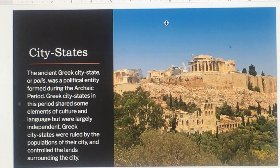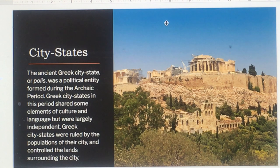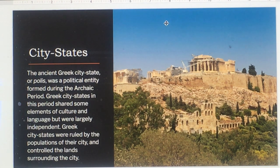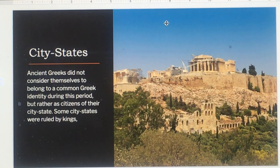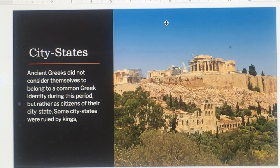The ancient Greek city-state, or polis, was a political entity formed during the Archaic period. Greek city-states shared some elements of culture and language but were largely independent, ruled by the populations of their city and controlling the surrounding lands. The ancient Greeks did not consider themselves to belong to a common Greek identity, but rather as citizens of their city-state. Some city-states were ruled by kings.